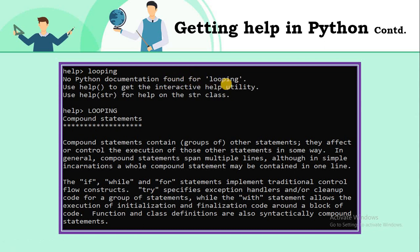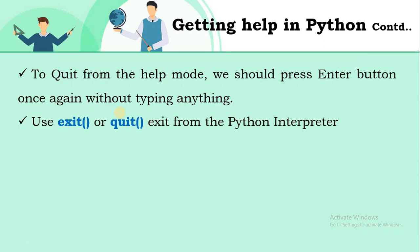So you must use capital letters only. For example, typing 'LOOPING' in uppercase shows all the information about looping. To quit from the help mode, press the Enter button without typing any topic name. To exit the Python interpreter entirely, you can use the predefined functions 'exit' or 'quit'.